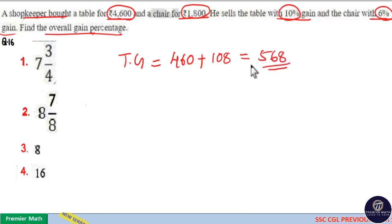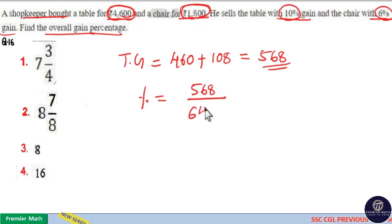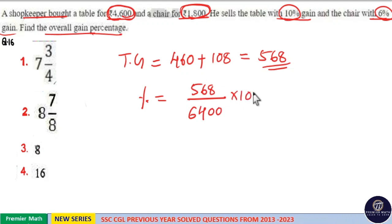Now, this 568 is out of 4,600 plus 1,800. So, percentage gain is equal to 568, the total gain, upon 4,600 plus 1,800, which is equal to 6,400 into 100.